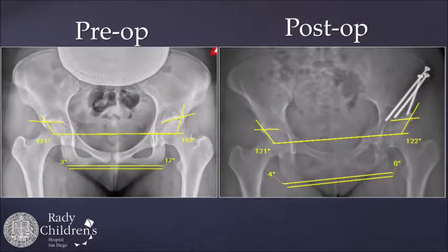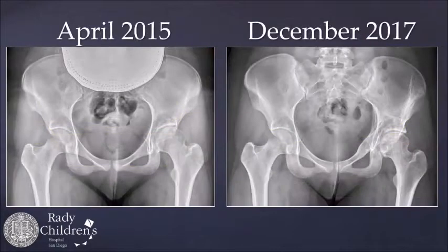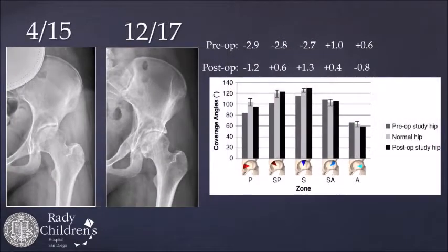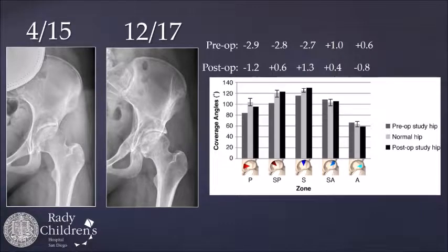Here are her pre-op and post-op images. After she healed, the screws were removed. You can see the pre-op hip, post-op hip, and the changes in the Z-score as well as the CT analysis shown with the sector analysis.